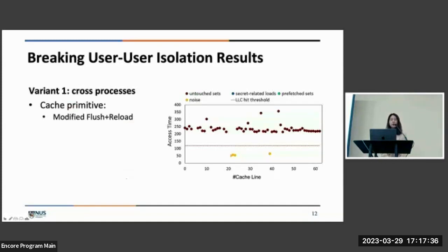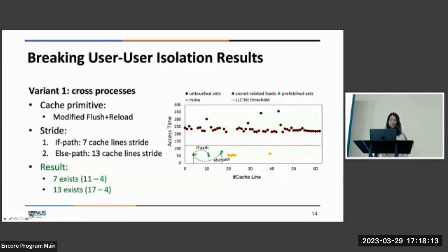So initially for untouched sets, those dark dots represent high access time because they are in the DRAM instead of in the cache. And we also see some noises, which is the yellow dots. Then, the attacker trains the load instruction in the if path with stride 7 and else path with stride 13. We let the victim run two runs of the branch. Now, from the result, we see that a stride of 7 exists. This implies that the if path was executed by the victim. And we can also see a stride of 13 exists for the else path.